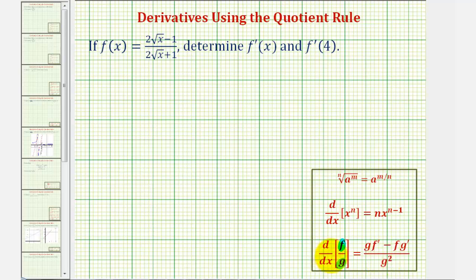Before we apply the quotient rule, we want to rewrite these square roots as rational exponents. Since for a square root the index is two, the square root of x is equal to x to the one half power, using this property.